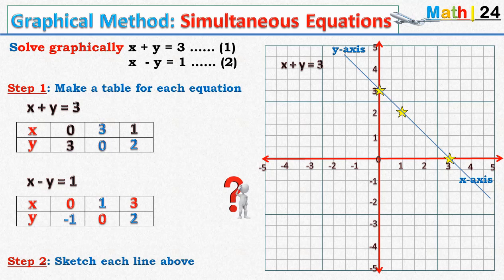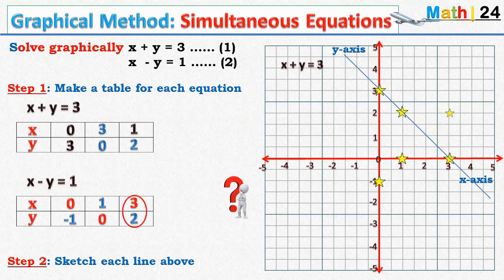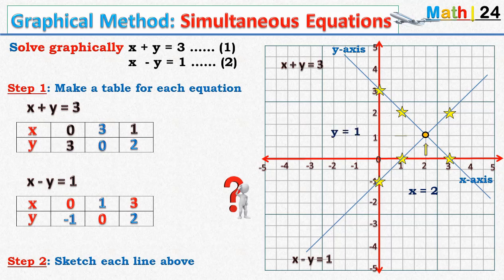We now move to the second equation: when x is zero, y is minus one; when x is one, y is zero; and when x is three, y is two. We link these three points and obtain the equation x minus y equals one. These two lines intersect at the point where x equals two and y equals one, and this gives us the solutions to this system.